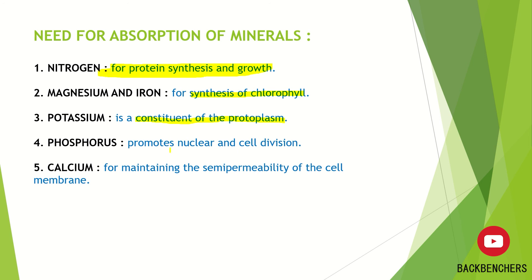Phosphorus promotes nuclear and cell division, hence it affects the growth of the plant. Calcium maintains the semi-permeability of the cell membrane. Plant cells have both a cell wall and a cell membrane — the cell membrane is semi-permeable and the cell wall is permeable. To maintain the semi-permeable nature of the cell membrane, the mineral calcium is needed, making it very important for the plant.